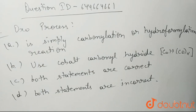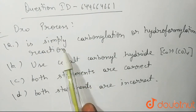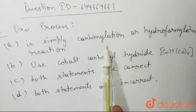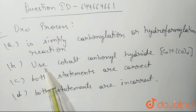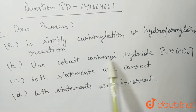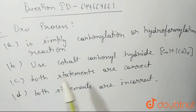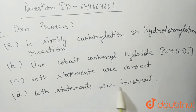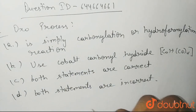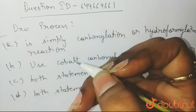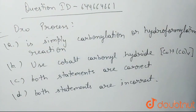Hello students, the question is: Oxo process is simply carbonylation or hydroformylation reaction. Use cobalt carbonyl hydride. Both statements are correct, and both statements are incorrect. So out of all these four options, we need to tell which one is the correct option for Oxo process.